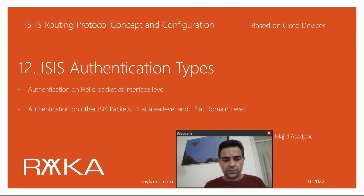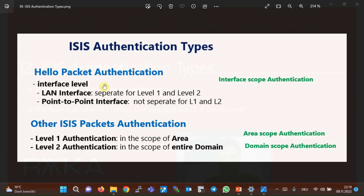Hello packets are authenticated at the interface level depending on the interface type. Level one authentication can be separate from level two authentication. On a LAN interface where level one hello is sent separately from level two hello, authentication can be done for each level individually. But on a point-to-point interface where only one kind of hello is sent, level one authentication is the same as level two authentication.